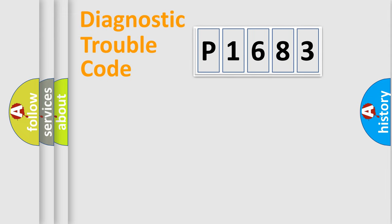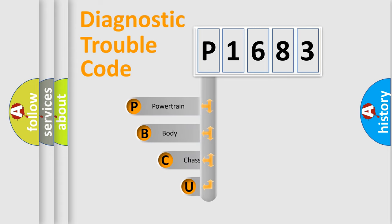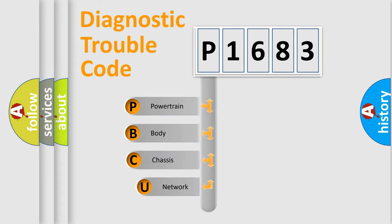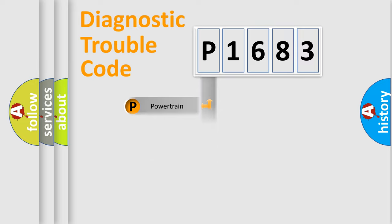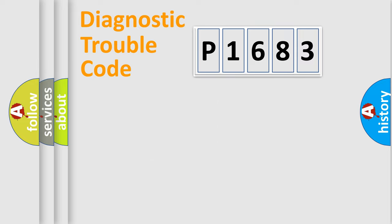Let's do this. First, let's look at the history of diagnostic fault code composition according to the OBD2 protocol, which is unified for all automakers since 2000. We divide the electric system of automobile into four basic units: Powertrain, Body, Chassis, Network.